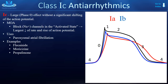The class 1C antiarrhythmic agents have the largest effect on phase 0 without a significant shift of the action potential. Their mechanism of action involves a strong block of the sodium channels, causing a large decrease in the rate and rise of the action potential. They are used for paroxysmal atrial fibrillation. The best three examples for this class are flecainide, moricizine, and propafenone.